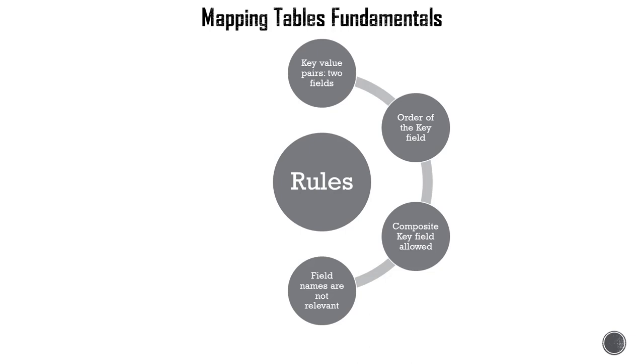When you use the mapping table load, you're mapping a key field from the mapping load to the key field in the fact table. Even though the key fields are required in both tables, the names are not important, since when you use the ApplyMap function in the fact table, the key field will implicitly map to the key field in the mapping table. That is why the order of the fields in the mapping table is important.